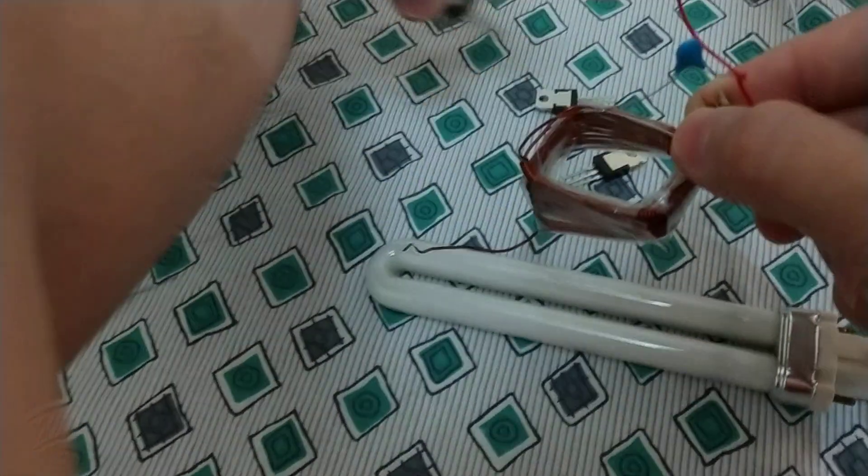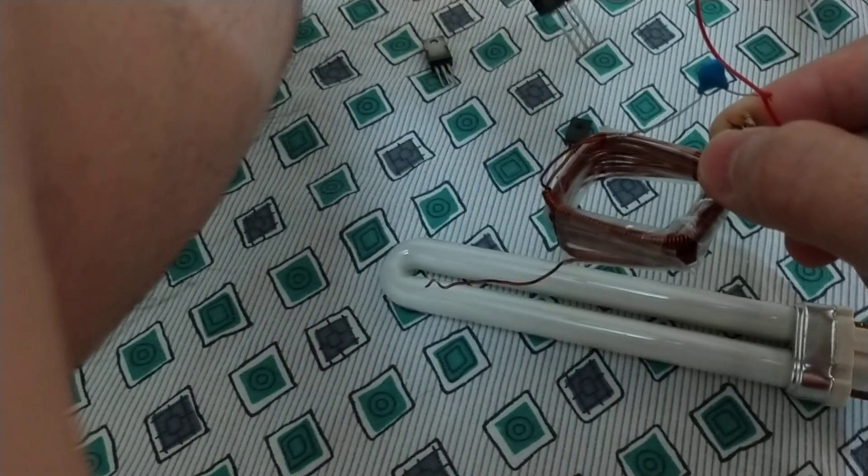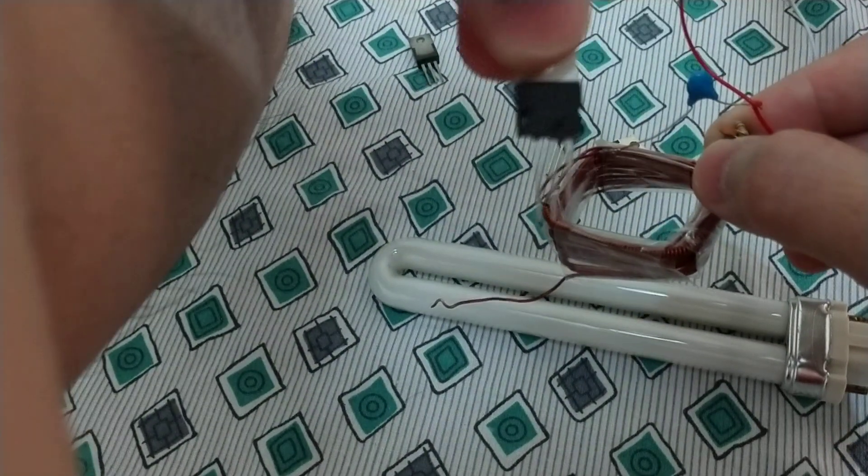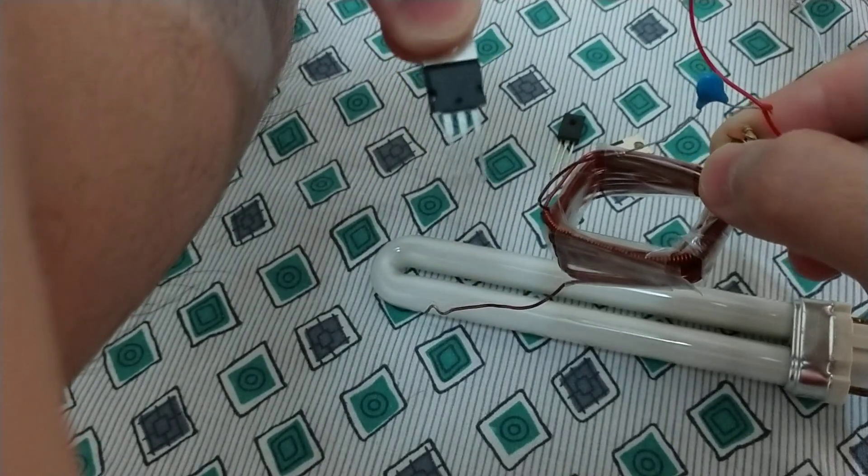Now I will try the other circuit and the other transistor. This is the TIP31 that I showed earlier.